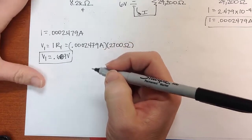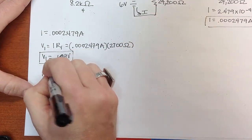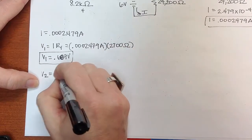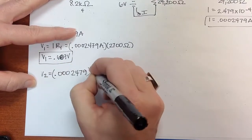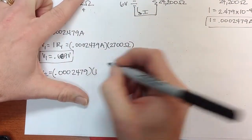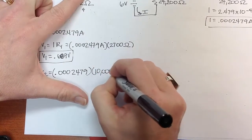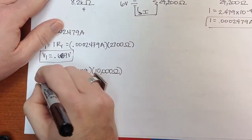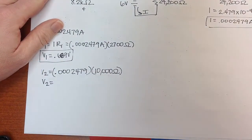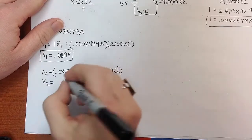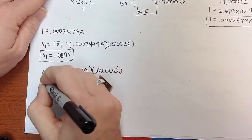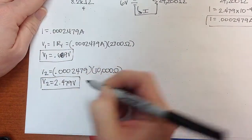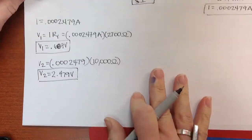I'm going to do now V2, 0.0002479 times 10,000, and V2 is equal to 2.479 volts. Well, that's a bigger voltage drop, and that's my biggest resistor, so that's good news for me.